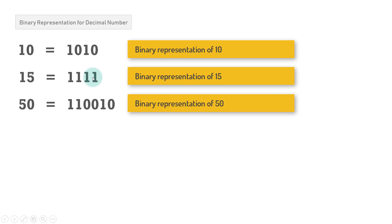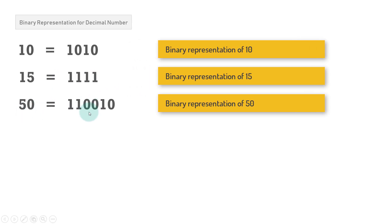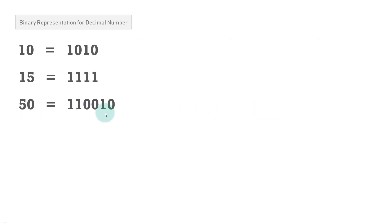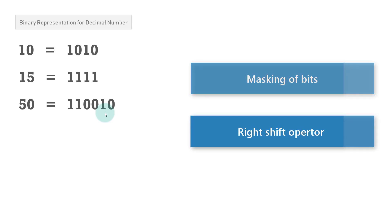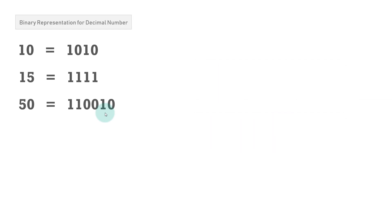We need to find the number of set bits. In the number 10, we have set bits at two positions, so the total count is two. In number 15, we have four set bits. And in number 50, we have three set bits. For solving this problem, we will use the masking approach and right shift bit manipulation approach. Before solving, we'll discuss some basic concepts needed.